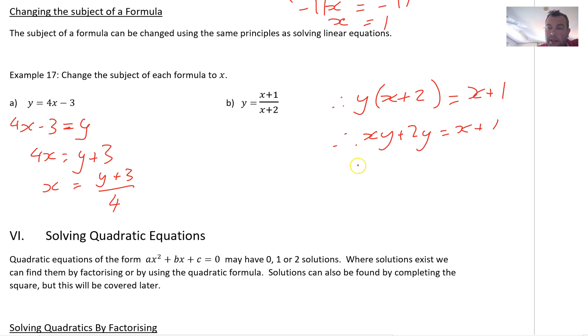So, let's explain this. And I get xy plus 2y equals x plus 1. Now, I'm going to say, therefore, xy minus x equals 1 minus 2y.